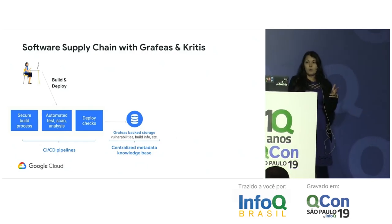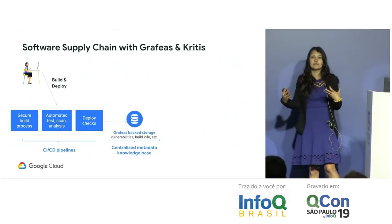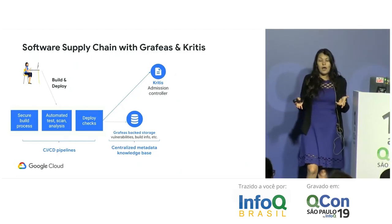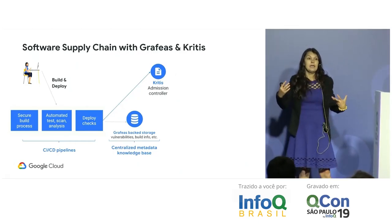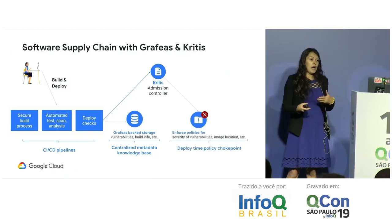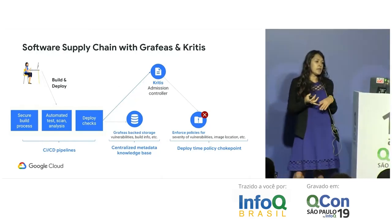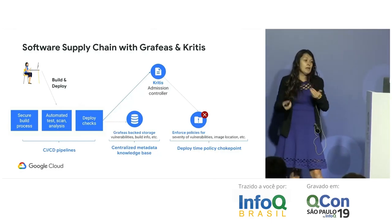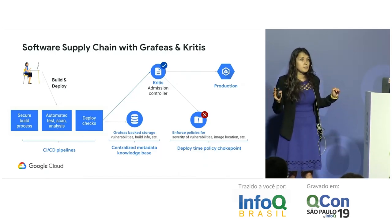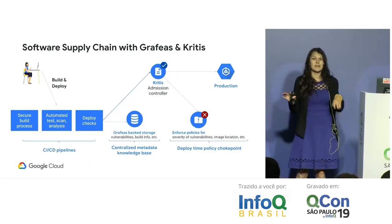For deploy checks we want policies codified in config so we can control and review changes. That's where Kritis comes in. Kritis is an admission controller for Kubernetes that runs policy checks defined by your cluster admin, and either denies a pod from launching — if it finds severe vulnerabilities or doesn't trust the image location — or allows it to deploy to production. Two-thirds of the room use Kubernetes, so you're in the right talk.